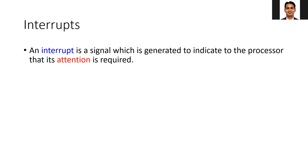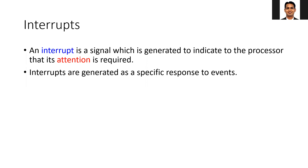An interrupt is a signal which is generated to indicate to the processor that its attention is required. Interrupts are generated as a specific response to an event. Interrupts should be used carefully and should be generated only when there are very critical events.